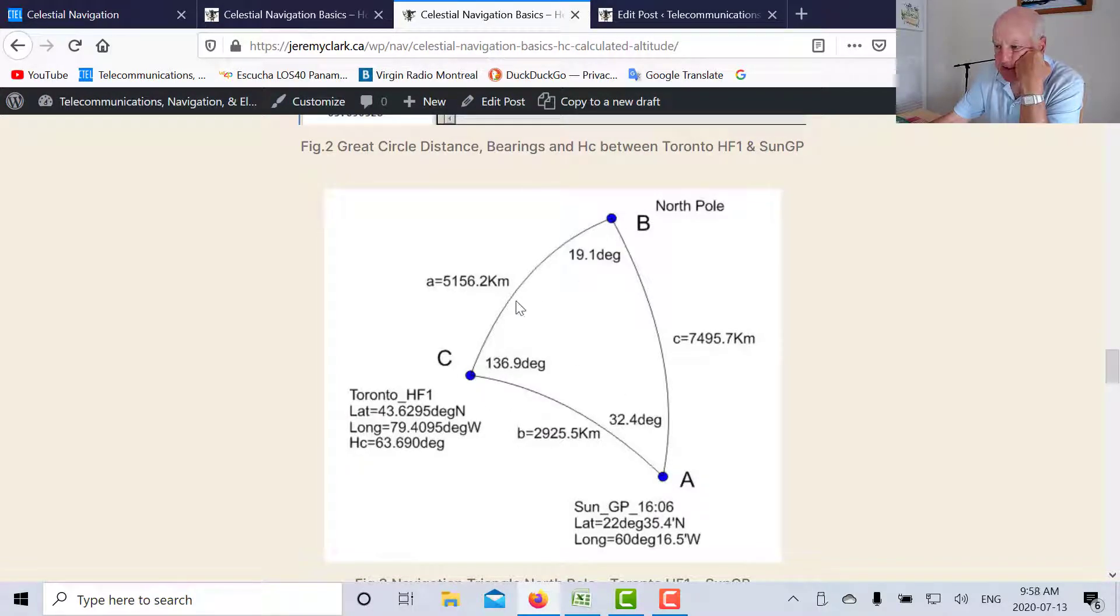So here's a spherical triangle. We know the north pole, we know this position, we know that position. This is the meridian that goes through the north pole and Toronto. This meridian here, we know its length. How do we know its length? Well we know the latitude of C. The latitude of B is 90 degrees.